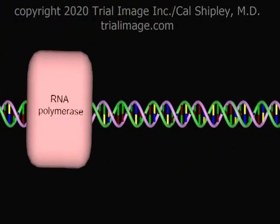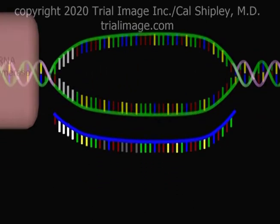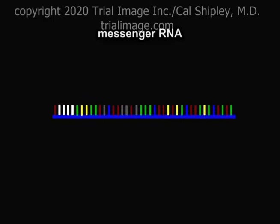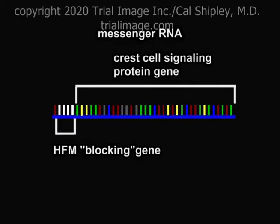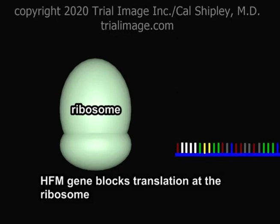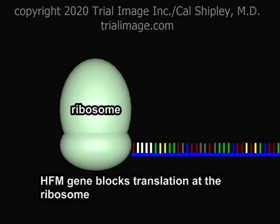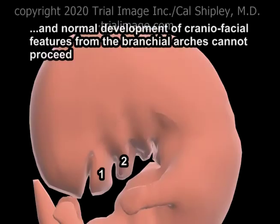The HFM gene, as well as a sequence of base codes encoding for proteins, is copied and converted to messenger RNA by RNA polymerase. One theory is that the HFM gene acts by blocking translation of signaling protein genes at the ribosome. Production of proteins critical to migration and specialization of neural crest cells is impaired, and normal development of craniofacial features from the first and second branchial arches cannot proceed.